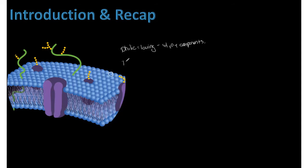The top portion is hydrophilic — 'philic' meaning loving or attracted to — so it wants water and its components. The phobic portion is the fatty acid chain. Like oil and water, they don't mix; the fatty acid chains repel water. They are water-fearing, meaning they repel water and its components.